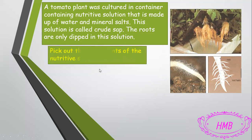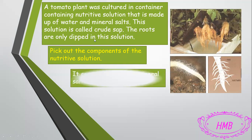The first question: pick out the components of the nutritive solution. The tomato plant was placed in a container with a nutritive solution. If we read the paragraph again, we can find that the nutritive solution is made up of water and mineral salts. So this is the answer — we copy it from the paragraph.